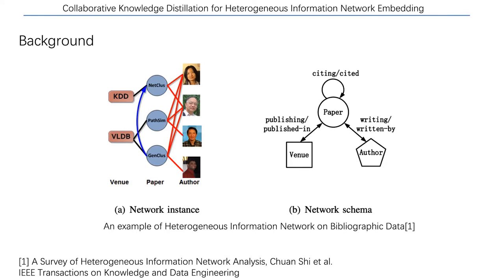However, directly analyzing HINs is inconvenient since each node may contain attributes and several types of relations should be considered in a unified framework. To overcome this challenge, graph embedding or graph neural network methods are introduced to HIN, which we also call HIN embedding. The purpose of HIN embedding is to learn low-dimensional representations for each node so that both the proximity between nodes and the semantic meaning of each metapath can be preserved in the embedding space.